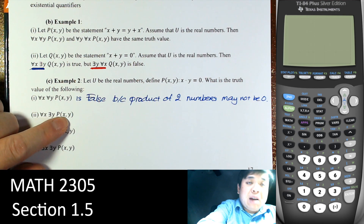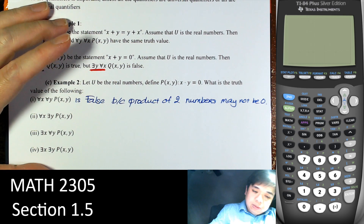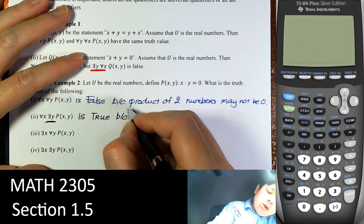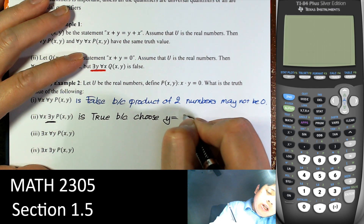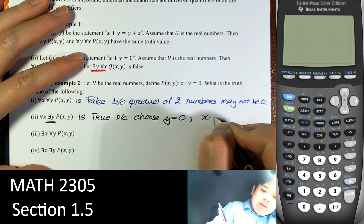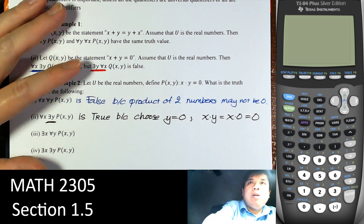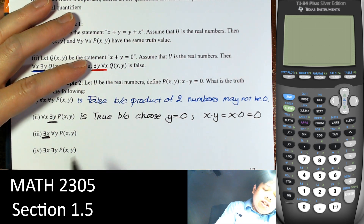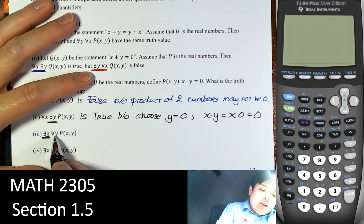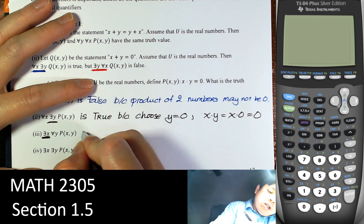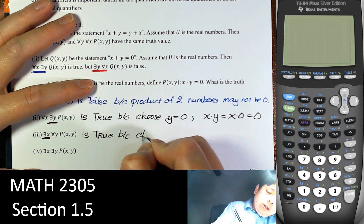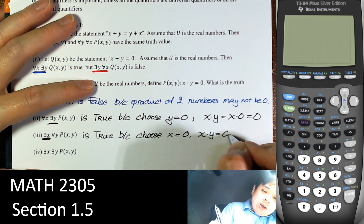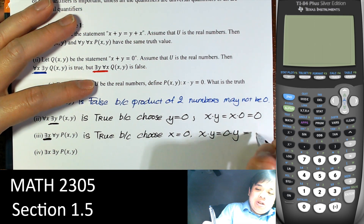Now for every x, there exists a y such that P(x,y) — this is true, because we can choose y to be equal to 0. In that case, x times y is x times 0, which equals 0. It doesn't matter what x is; we can always choose y to be 0. Likewise, there exists an x such that for every y P(x,y) is still true, because if we choose x to be 0, then 0 times y equals 0 regardless of y.